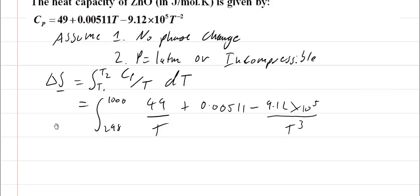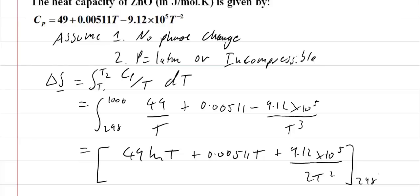So now I'm integrating this from one temperature to another, so I get 49 ln T plus 0.00511T plus 9.12×10^7 over 2T^2, okay, and that's evaluated from 298 to 1000 degrees Kelvin.